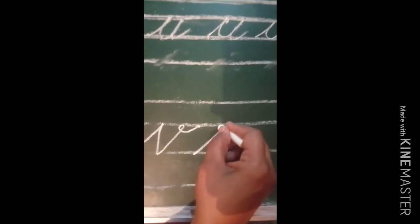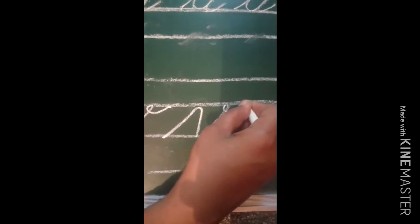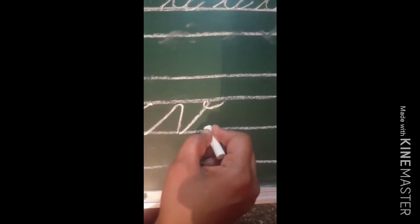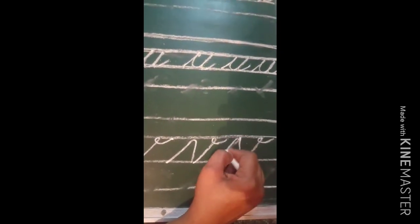Again, see letter V: go upside, come down, go upside, come down, go upside — letter V. This is letter V. Again, we will revise: letter T, letter U, letter V.